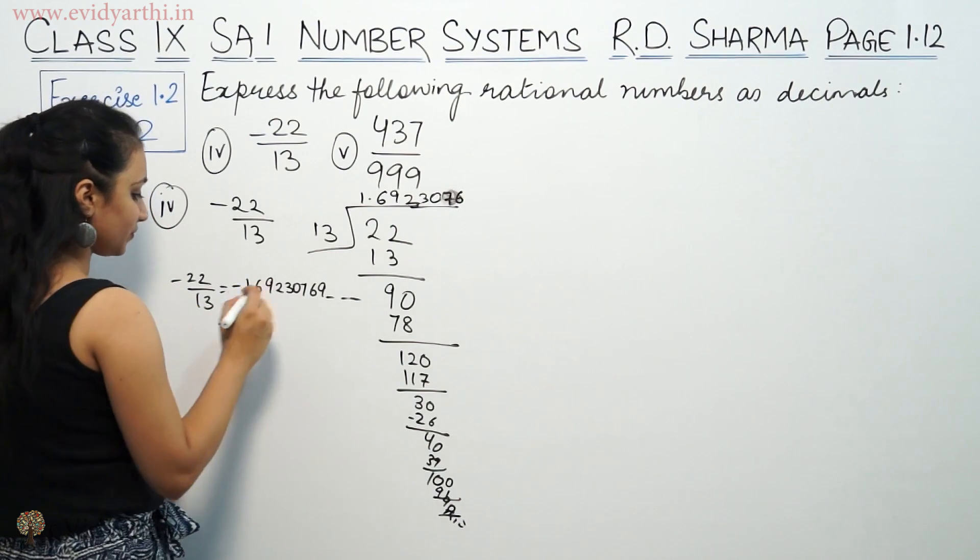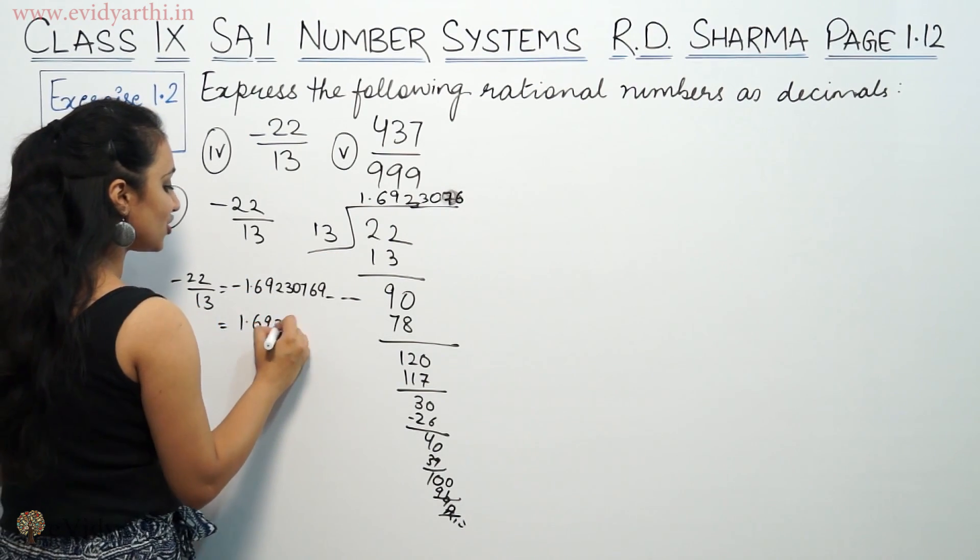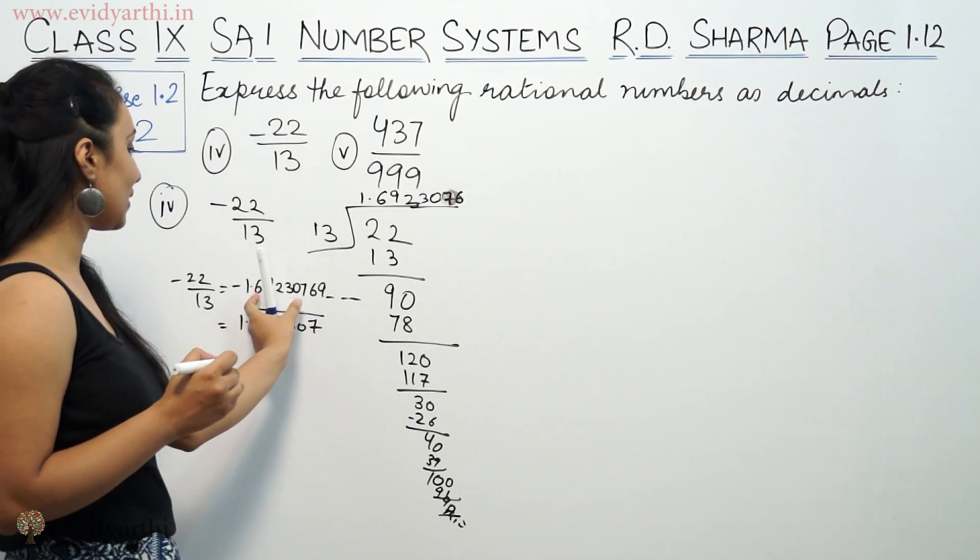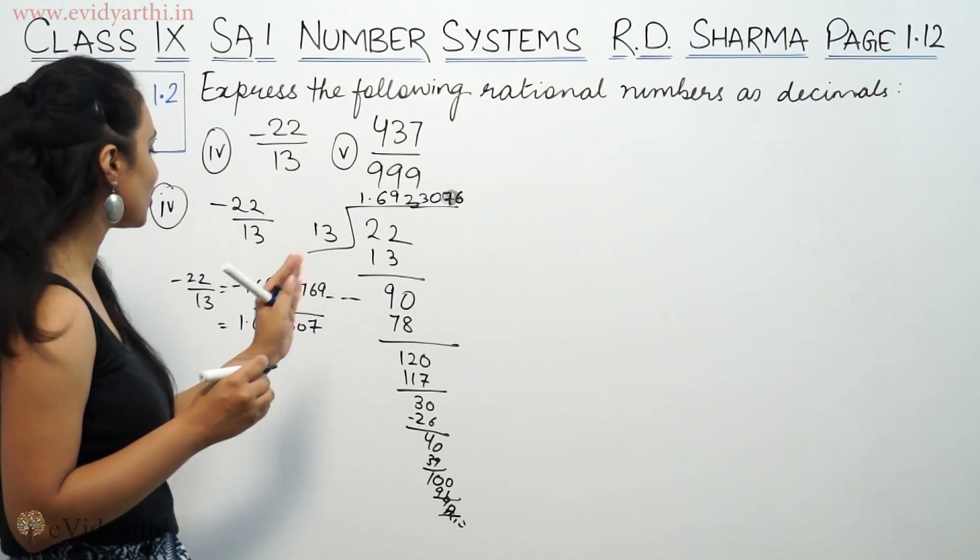Now the digits are repeating. So we have minus 22 by 13 equals minus 1.692307692307... These six digits repeat after the decimal point.